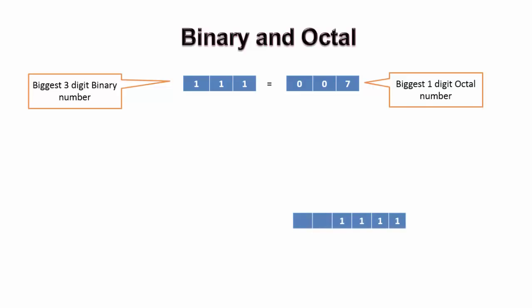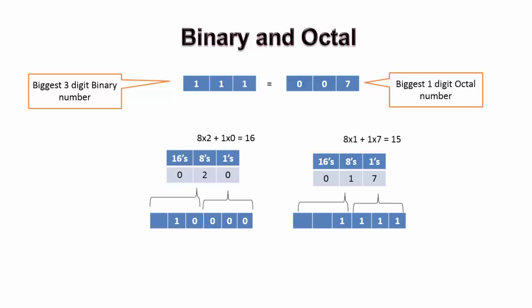Now let us consider this binary number. If I club the three digits together, then I can create a quick equivalent octal number, which makes it more readable and then quickly calculate the decimal value of it based on the positional values.